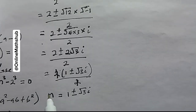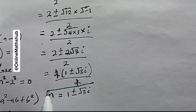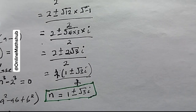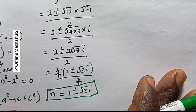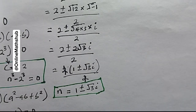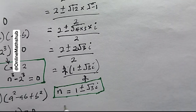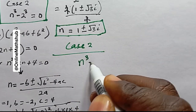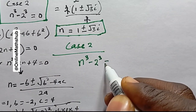So we've got three values of n from Case 1. We're going to proceed to Case 2, where we'll get the remaining three values of n, giving us the complete six values that satisfy the problem.